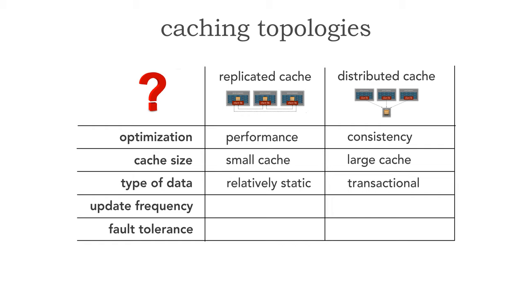The type of data also matters. Relatively static data that doesn't change often is really well suited for a replicated cache, because there aren't many updates so we don't have to worry about replication latency — consistency stays pretty solid. However, for high-transactional data, a distributed cache is usually a better solution due to data consistency. The replicated cache sometimes can't keep up, so if I'm reading from another service instance I may end up with stale data.